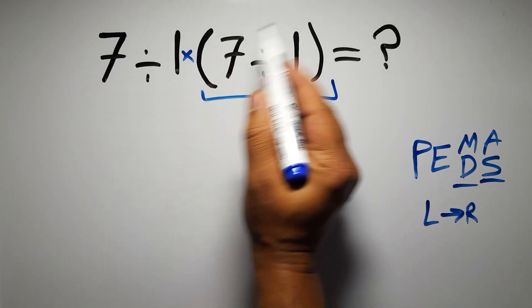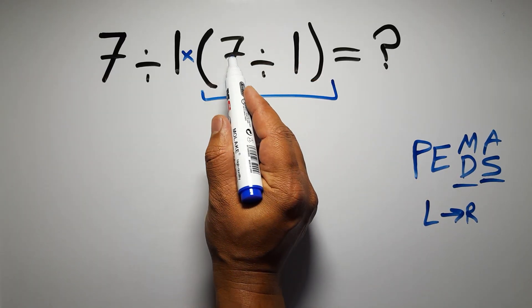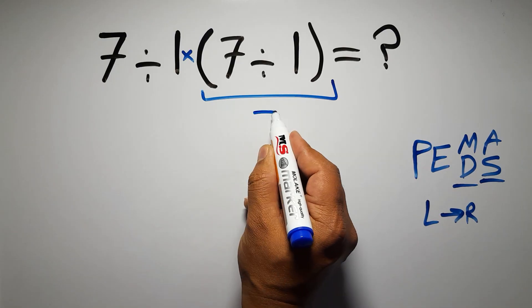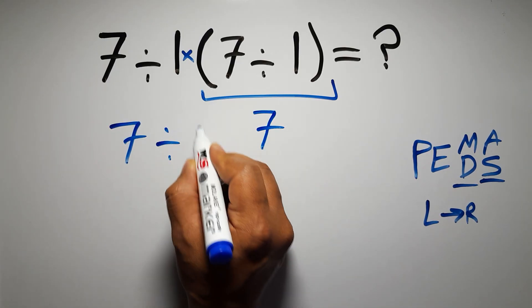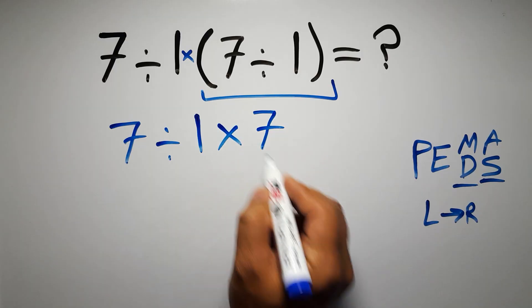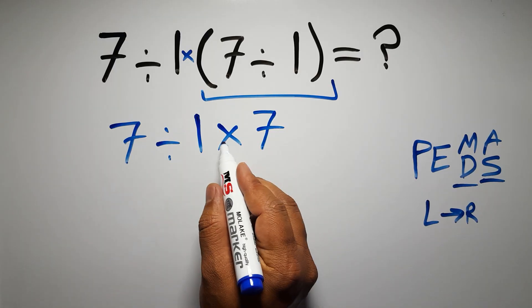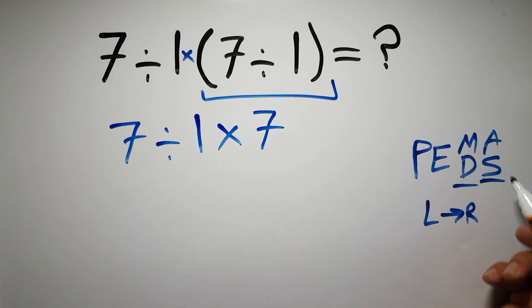So first, these parentheses. Inside these parentheses we have 7 divided by 1 which equals 7. So 7 divided by 1 times 7. Now we have 1 division and 1 multiplication. As I said, multiplication and division have equal priority and we have to work from left to right.